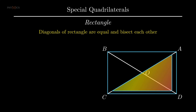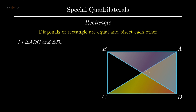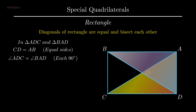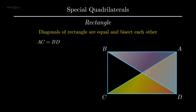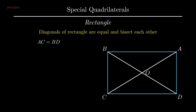To prove diagonals of a rectangle are equal, consider triangle ADC and triangle BAD, which include diagonals AC and BD respectively. As opposite sides of a rectangle are equal, side CD equals side AB, angle ADC equals angle BAD each being 90 degrees, and AD is the common side to both triangles. Therefore by SAS rule, triangle ADC is congruent to triangle BAD. By corresponding parts of congruent triangles, diagonal AC equals diagonal BD.